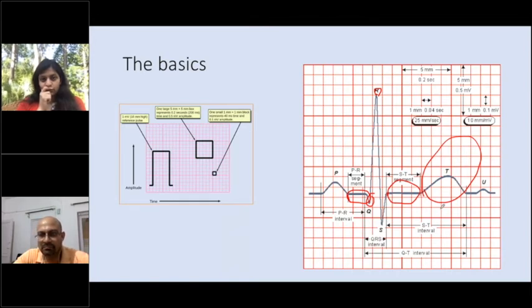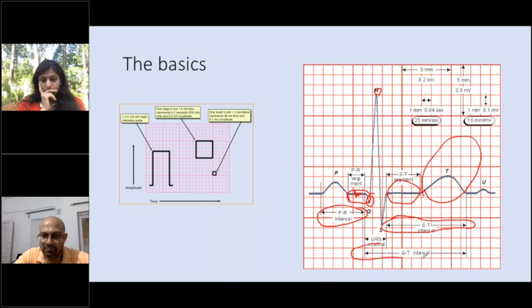A very basic concept: what is a segment and what is an interval? There are two main segments, PR segment and ST segment, and three intervals: PR interval, ST interval, and QT interval. An interval includes the wave. The duration of P wave plus PR segment is the PR interval. Duration of ST segment plus T wave is the ST interval. The duration from beginning of Q wave till the end of T wave is the QT interval.